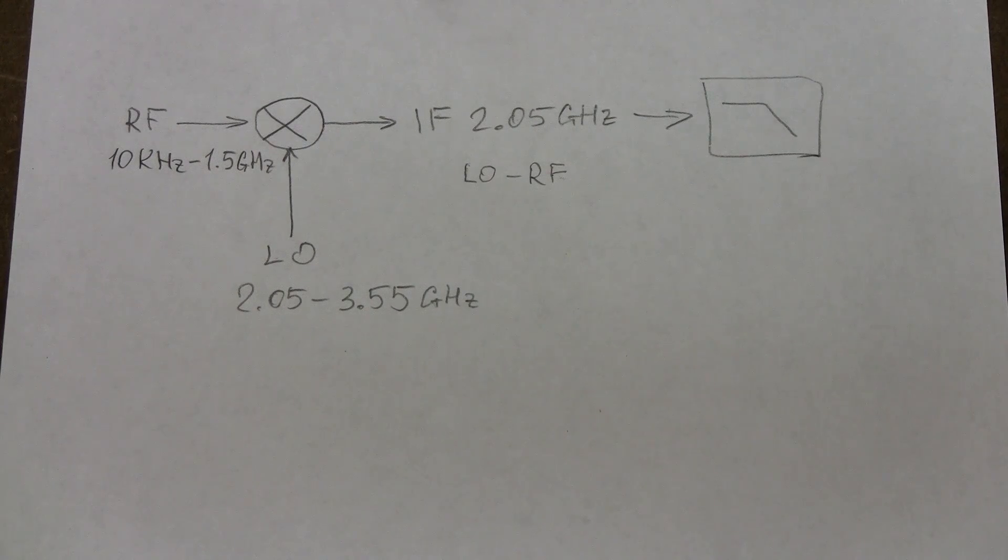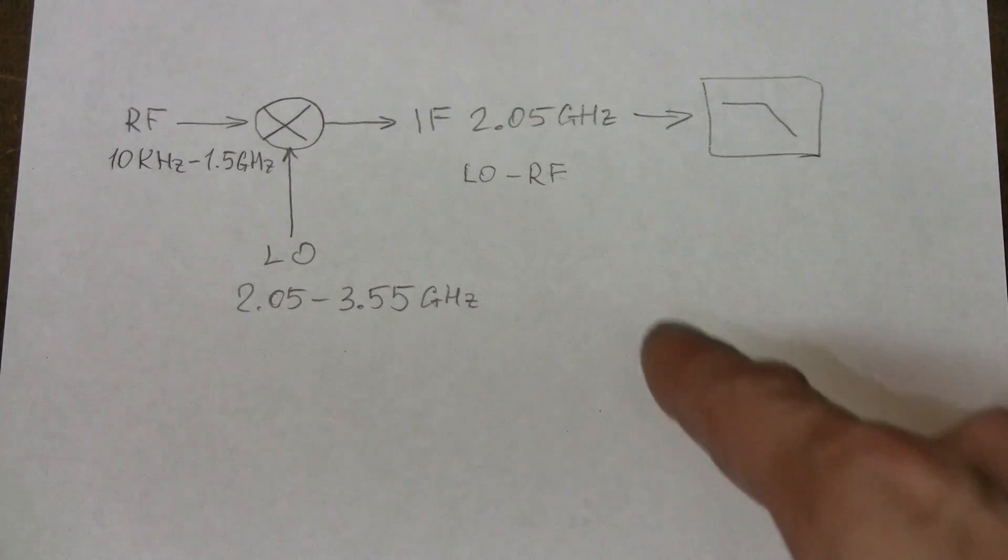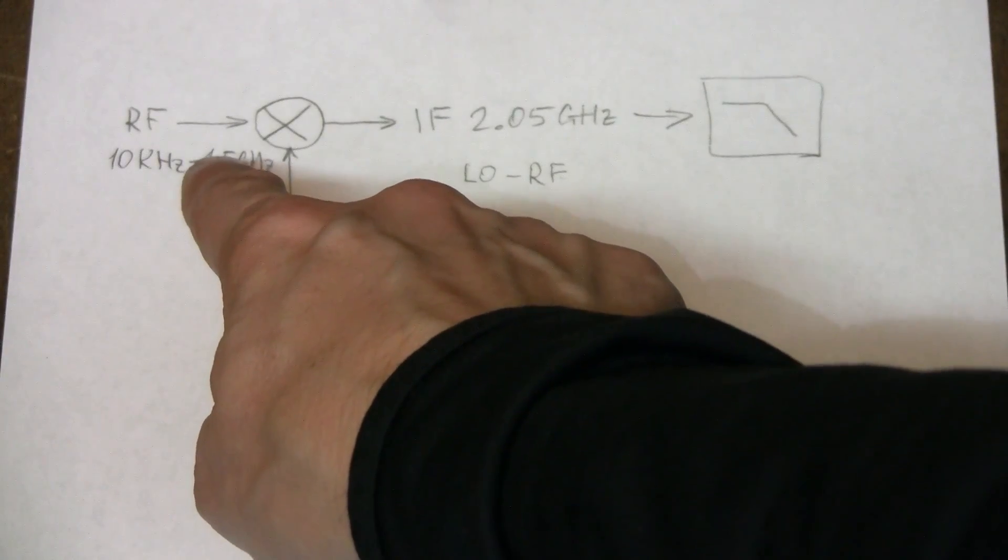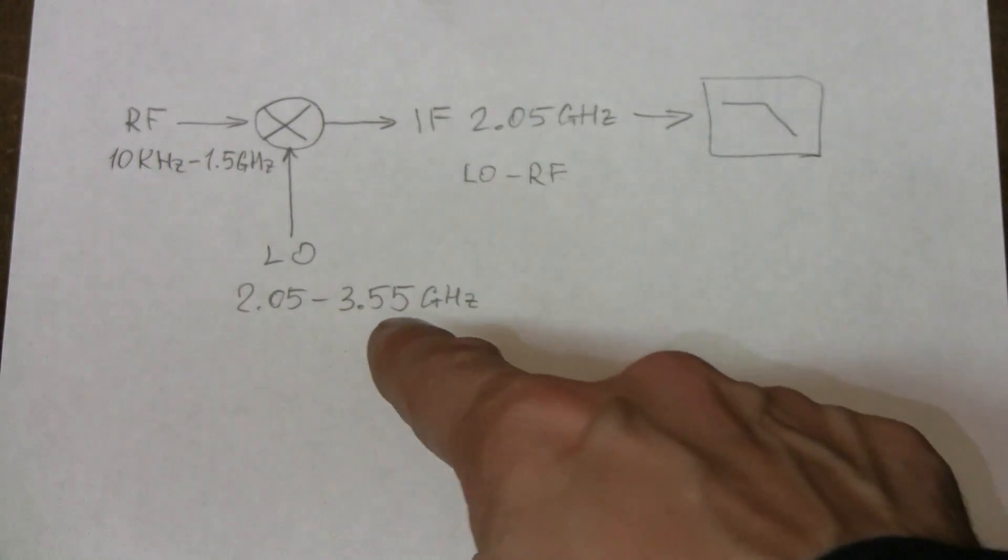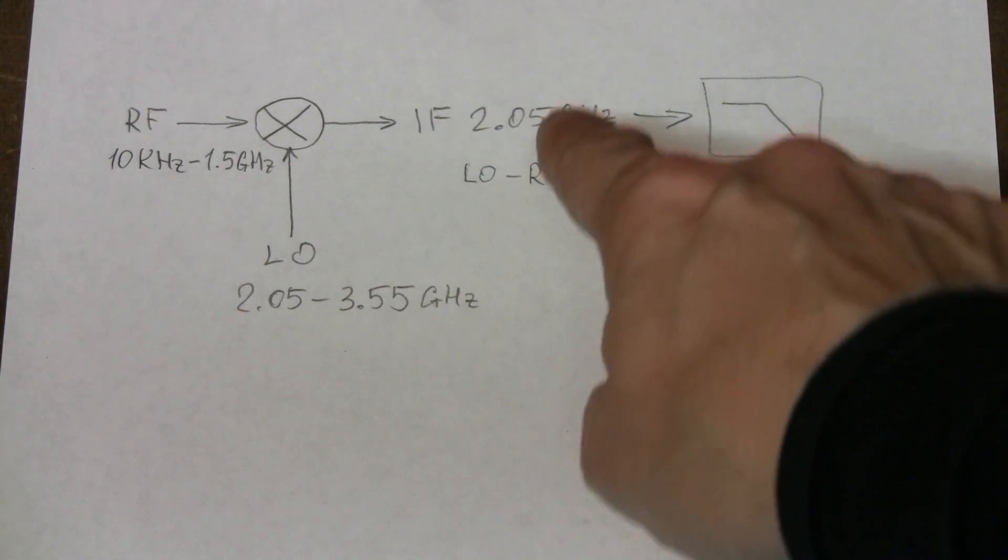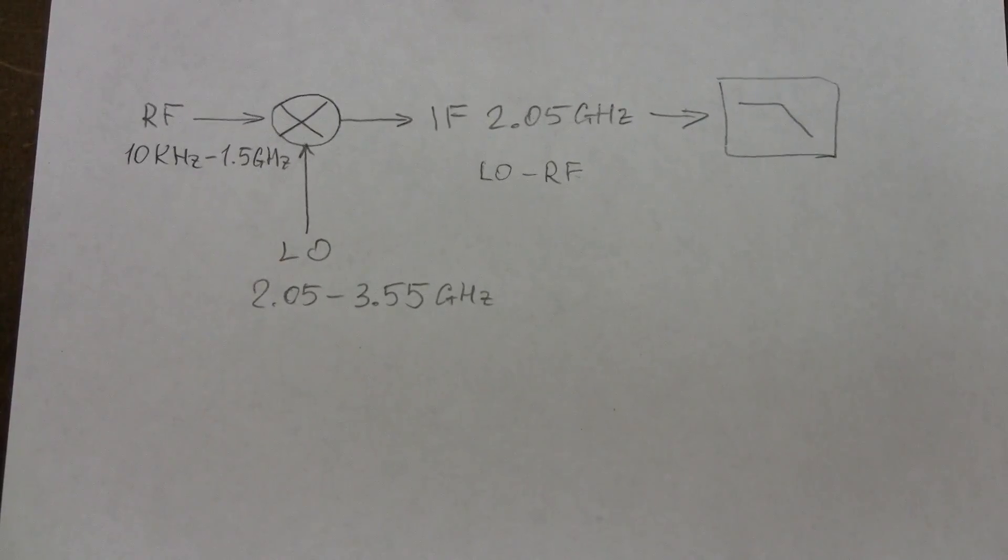And if you carefully look at the numbers we are clearly interested in this component LO minus RF. For example, this end of the range 1.5 GHz when subtracted from this end of the range 3.55 gives exactly this 2.05 GHz intermediate frequency and all other components are filtered out by the low pass filter right after the mixer.